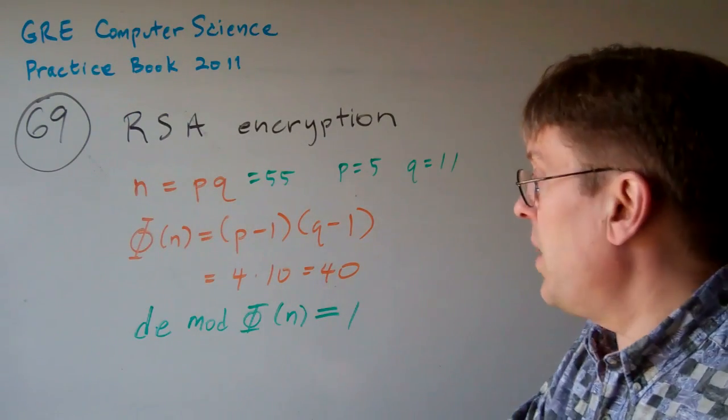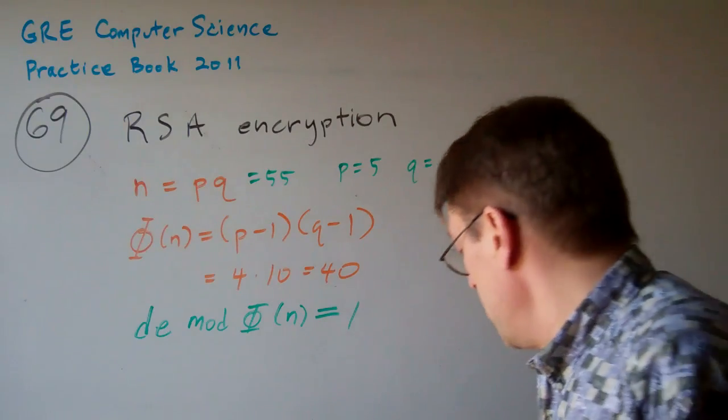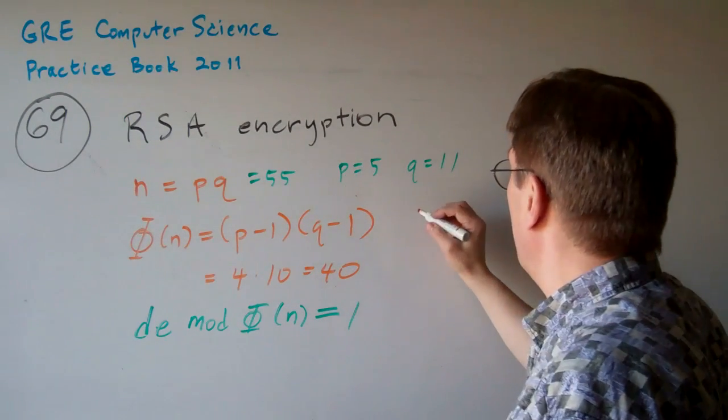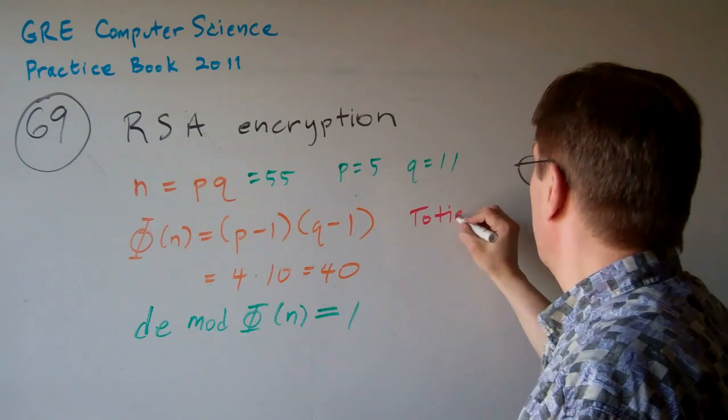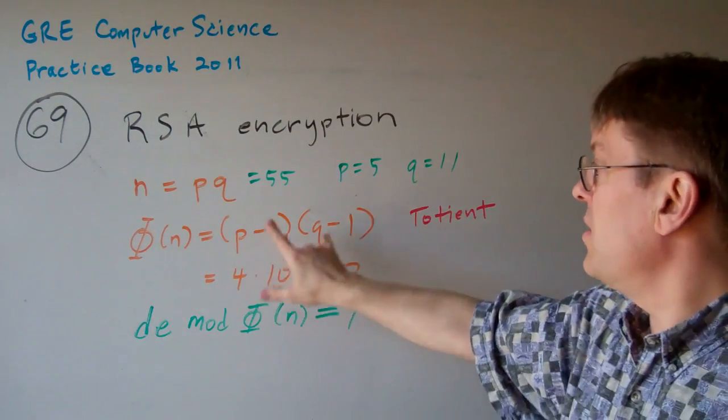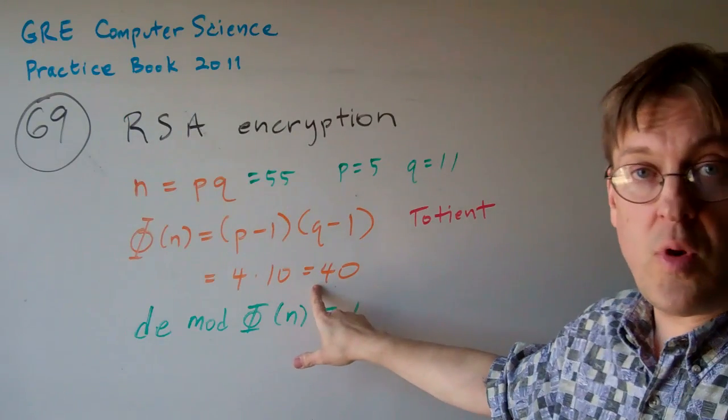Again, those are prime or relatively prime numbers. Now, the totient function, and let me write that for you, it's called totient or Euler's function. This is the prime number minus 1 times the other prime number minus 1, which in this case is 4 times 10, which is 40.